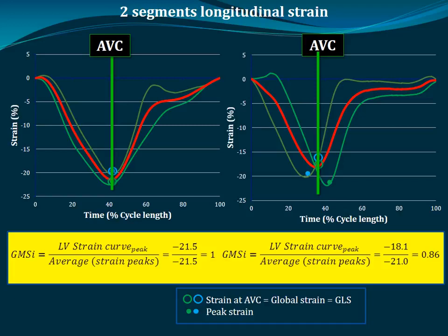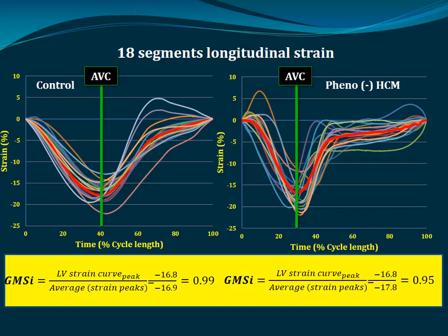Referring back to earlier discussion on conduction abnormalities and prolonged QRS, we are also looking at electrophysiology — specifically delays. One way to assess synchronicity of ventricular contraction is to see how the peaks coincide. If they coincide, you get a ratio of one (average strain versus average of peaks). If peaks happen before or after end-systole, the average graph is lower than the average of the peaks, creating a global mechanical synchrony index. If it is less than one, it could be a very early detectable change — and for 17 segments it is near one in normal patients.